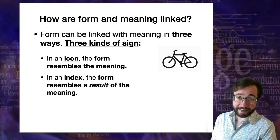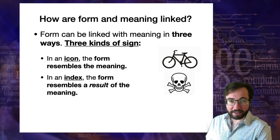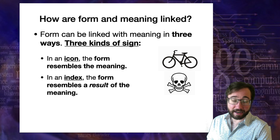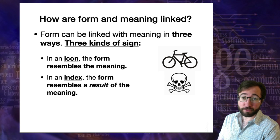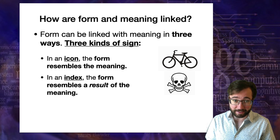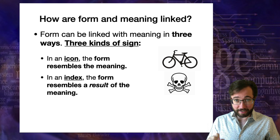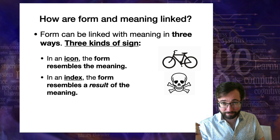The second kind of sign is an index. For example, a skull and crossbones — you might think it means poison, or more generally anything which could cause you to die. This is not an icon because it doesn't look like a dangerous substance. Rather, it is an index: the form resembles a result of the meaning. If you see this on a beaker of liquid, it means that if you drink it, you're going to end up looking like the skull and crossbones — that's the result. An index means that the form resembles the result of the meaning.